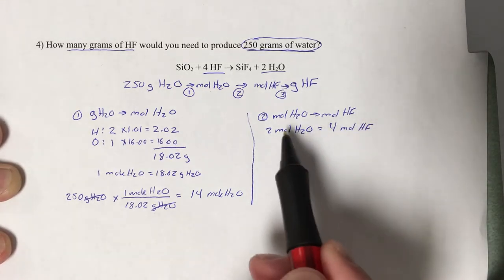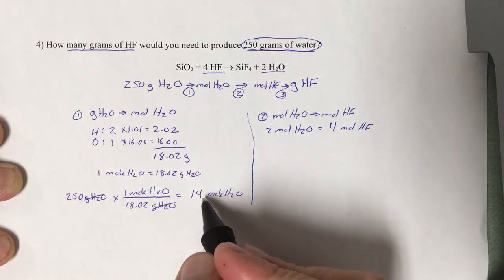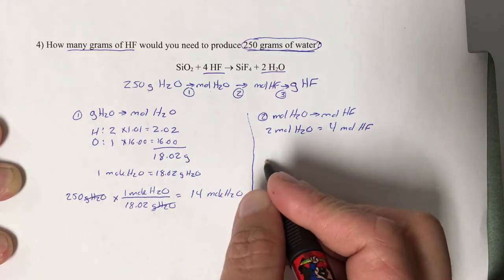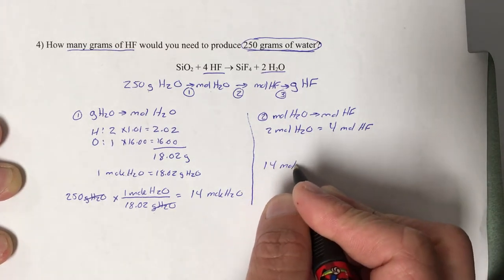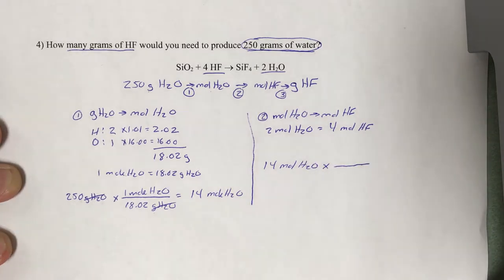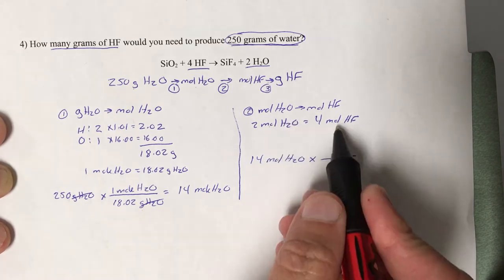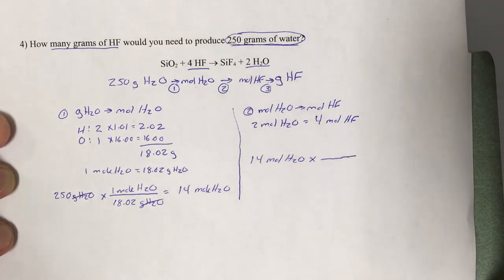At this point, you could reduce that to one to two if you want, but why do extra math, especially if you're already struggling and really focused on how to set this stuff up? Just leave it the way it is. Now, carry this number over as the starting point for your next calculation. We're starting with the 14 moles of water times our conversion factor. We can't look at moles this time to decide what to put where because they're both moles. This is why I'm always getting on your case when you don't write down the formulas. You've got to write down the unit and the formula.